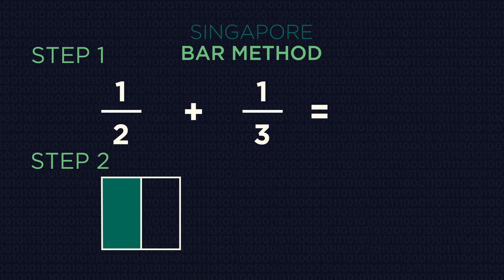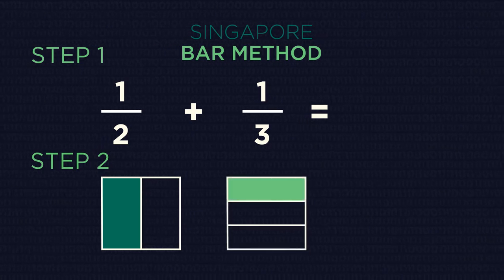Step 2. Draw the second fraction as horizontal bars. Step 3. Draw a common denominator by transferring grid lines onto both fractions.